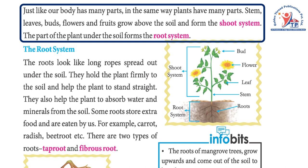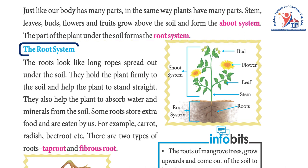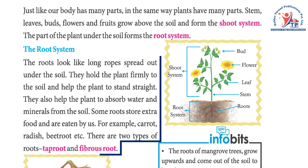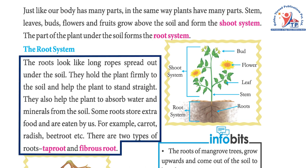Stem, leaves, flowers and fruits grow above the soil and form the shoot system. The part of the plant under the soil forms the root system.